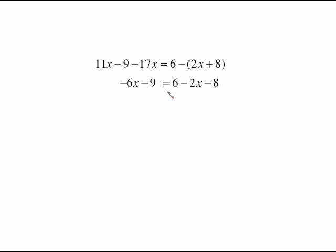The left side is already simplified. The right side has some like terms with 6 minus 8. So the 6 minus 8 gives me negative 2 and there's your negative 2x.